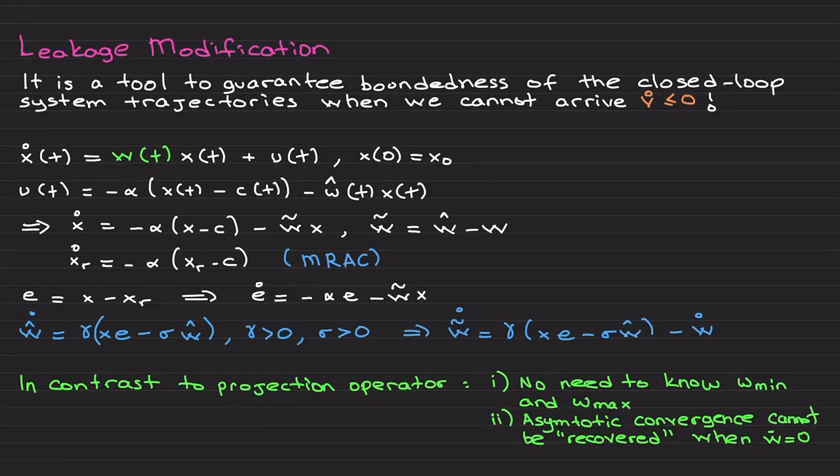Welcome back. I would like to cover now leakage modification. Basically, similar to the projection operator we just covered in the previous video, it is a tool to guarantee boundedness of the closed-loop system trajectories when we cannot arrive V dot less than or equal to zero.